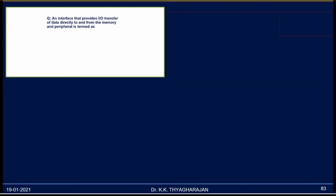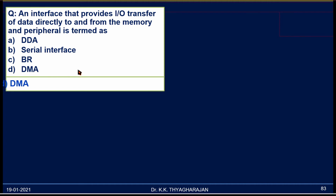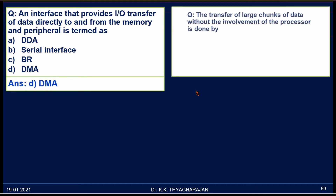Let us see some simple multiple choice questions. An interface that provides I/O transfer of data directly to and from the memory and peripheral is termed as: A) DDA, B) Serial Interface, C) BR, D) DMA. Only in DMA is data directly transferred from hard disk to memory, so the correct answer is D.